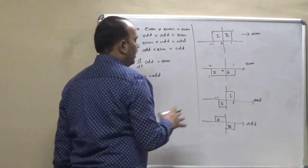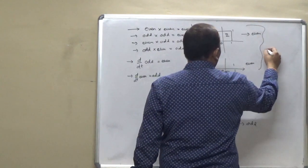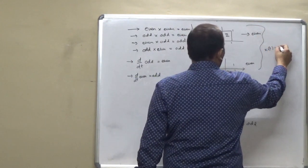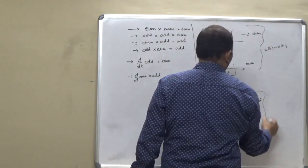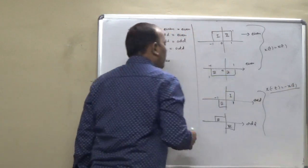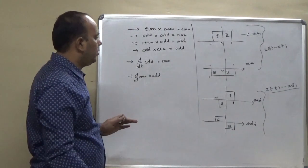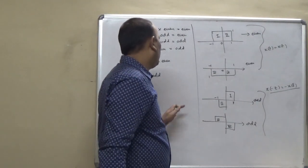Because for this signal, we can prove that, for both these signals, we can prove that x(-t) equals x(t) and for this signal, we can prove that x(-t) equals -x(t). So, this is the way, how to find out the even and odd.